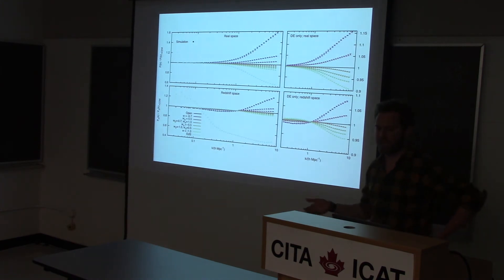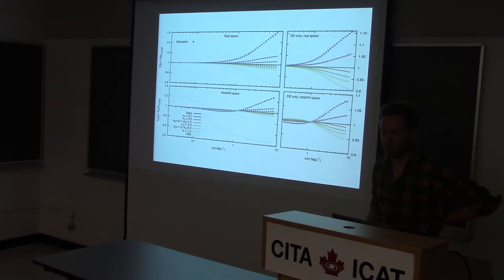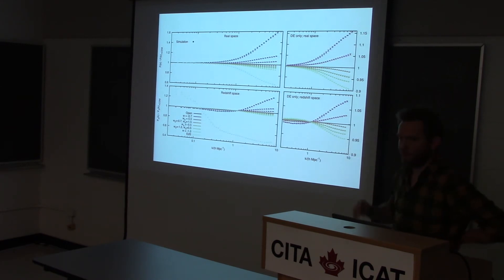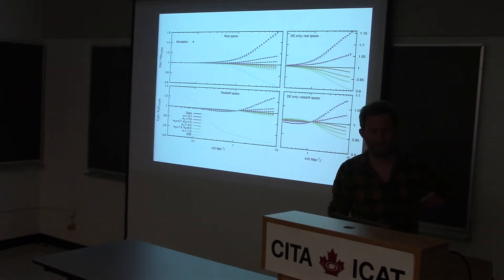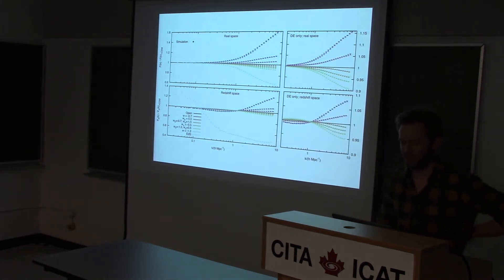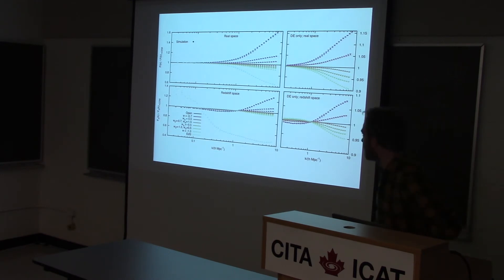Clearly, if your thought was that the nonlinear power spectrum should always be a function of the linear power spectrum at that redshift, you're not right — this is proof of that. The error bars are from three different realizations for each simulation. There's very little scatter compared to the differences in the curves. The question I now want to ask is: can we understand these differences using the spherical collapse model?